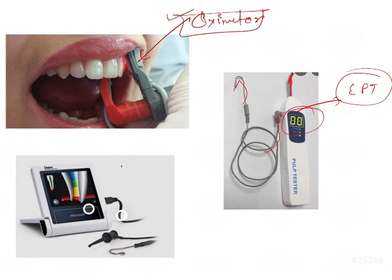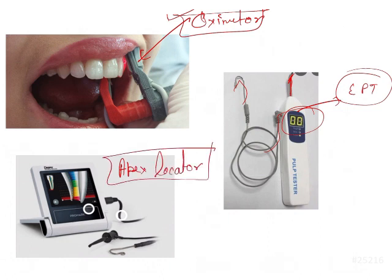Then you have the apex locator. This apex locator is used for measuring the working length. Now in this also, you will have a display, then there will be a cord, and there will be one vent that is used there to complete the circuit. There will be one knob or holder that is used for holding the K files.